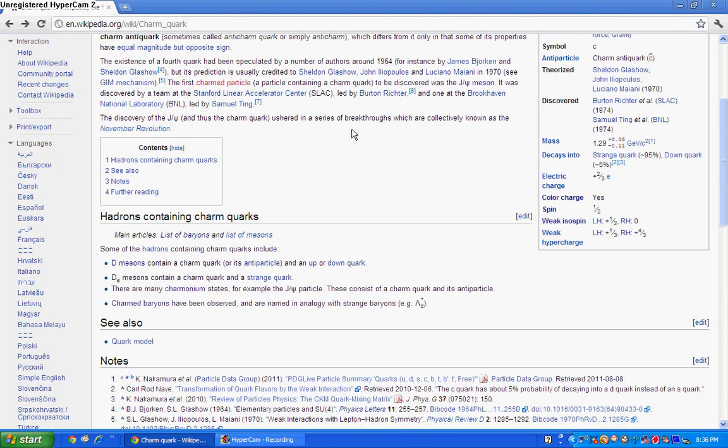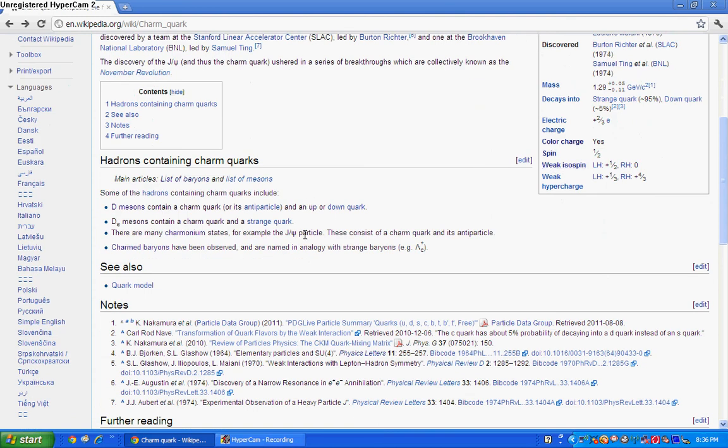The scientists at the labs were colliding particles and they saw the J/psi meson. It's a particle made of a charm and an anti-charm, and because there's a charm quark in it, it means a charm quark had to exist.